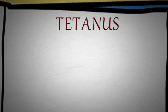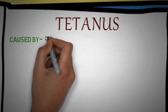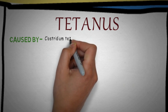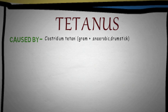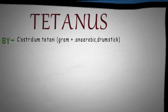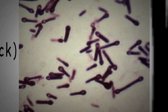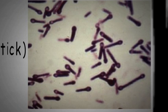First up, what is Tetanus caused by? It is caused by Clostridium tetani, which is a gram-positive anaerobic drumstick-shaped bacteria. Notice the rounded ends, which are basically spores giving the bacteria a drumstick-like appearance.